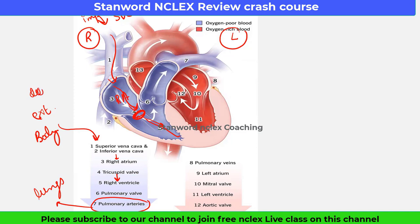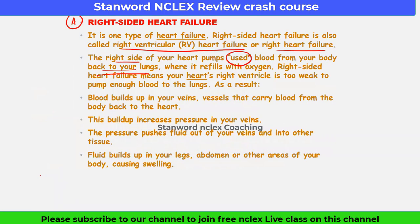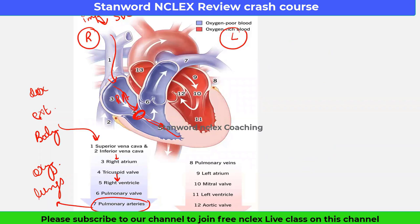The deoxygenated blood is oxygenated in the lungs. Right-sided heart failure means the heart's right ventricle is too weak to pump enough blood to the lungs. In right-sided heart failure, the right side of the heart has some kind of problem and is not able to pump blood into the lungs, so blood will collect in the right side of the heart.